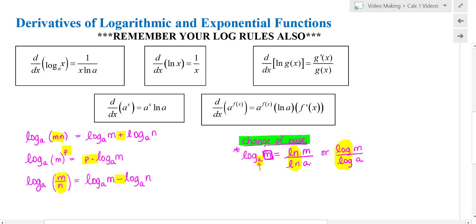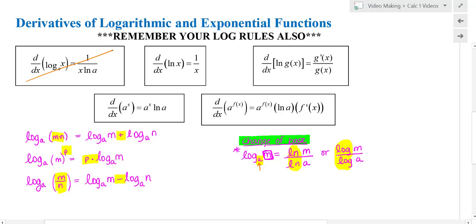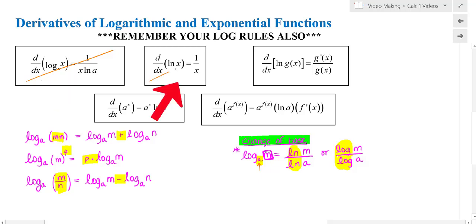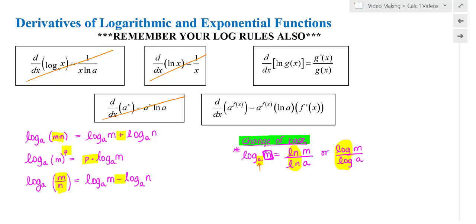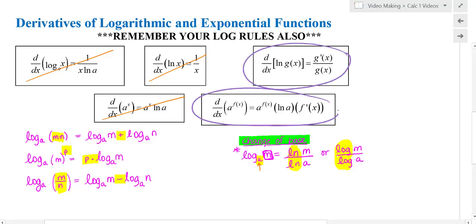For derivatives we want to stick with natural log. Because of that, I don't need to memorize the first derivative rule since I can derive it using change of base. The next one doesn't apply the chain rule, so I don't need to memorize that either. The bottom one for exponential functions also doesn't use the chain rule. Really, I'm only going to ask students to memorize these two rules.